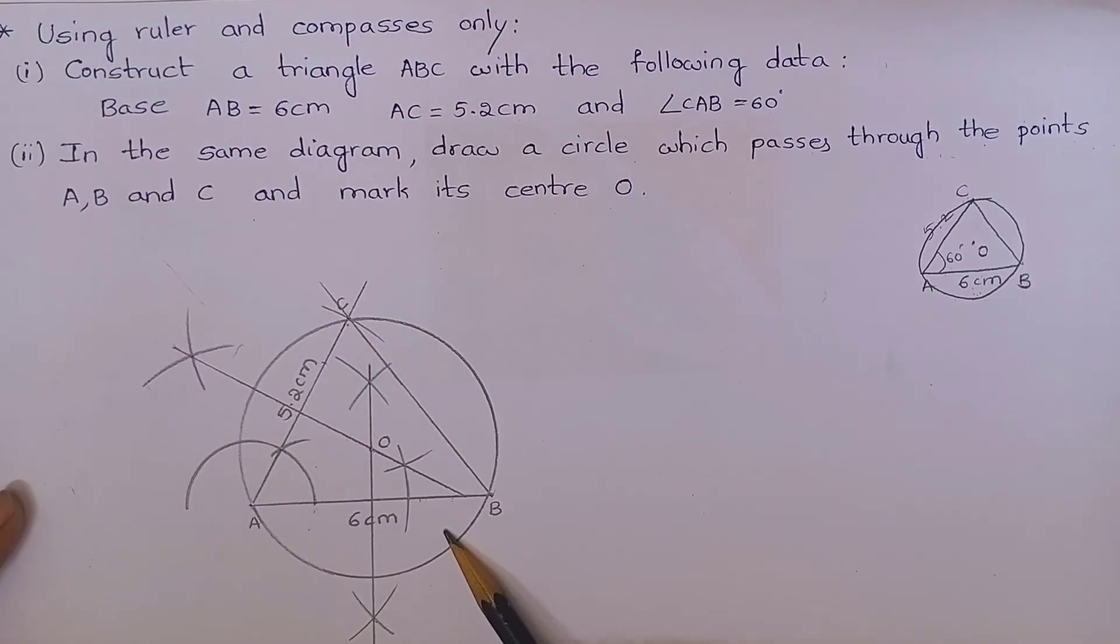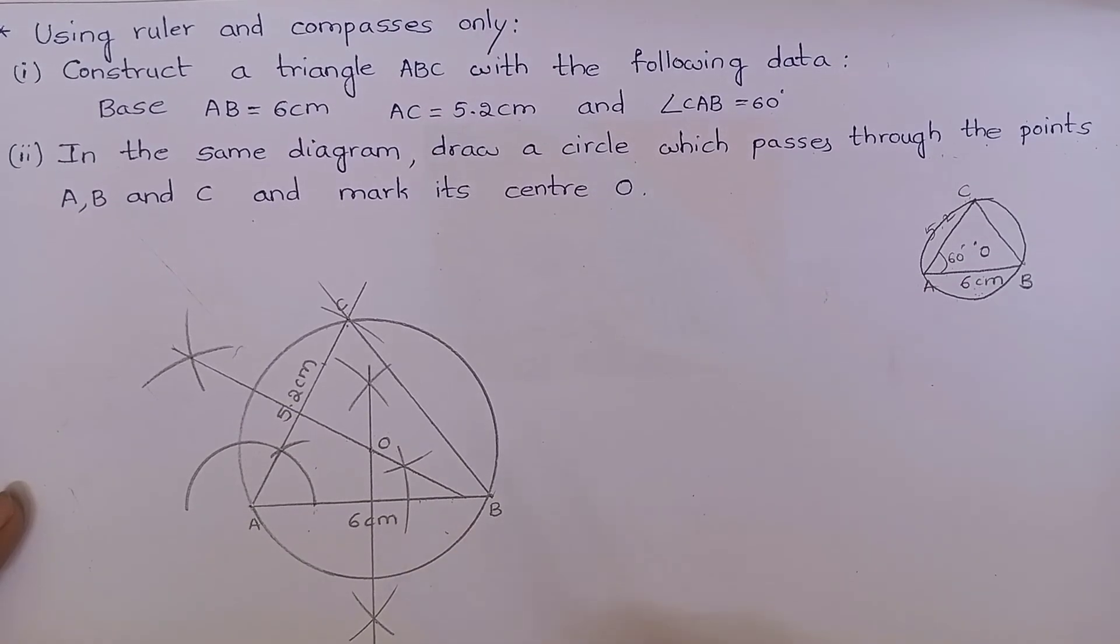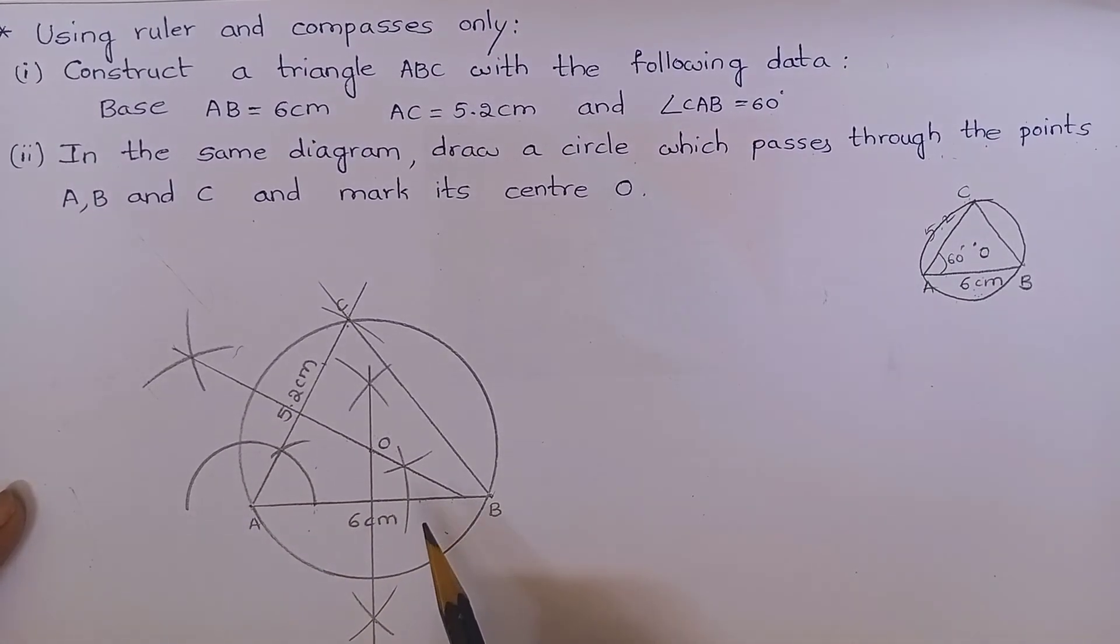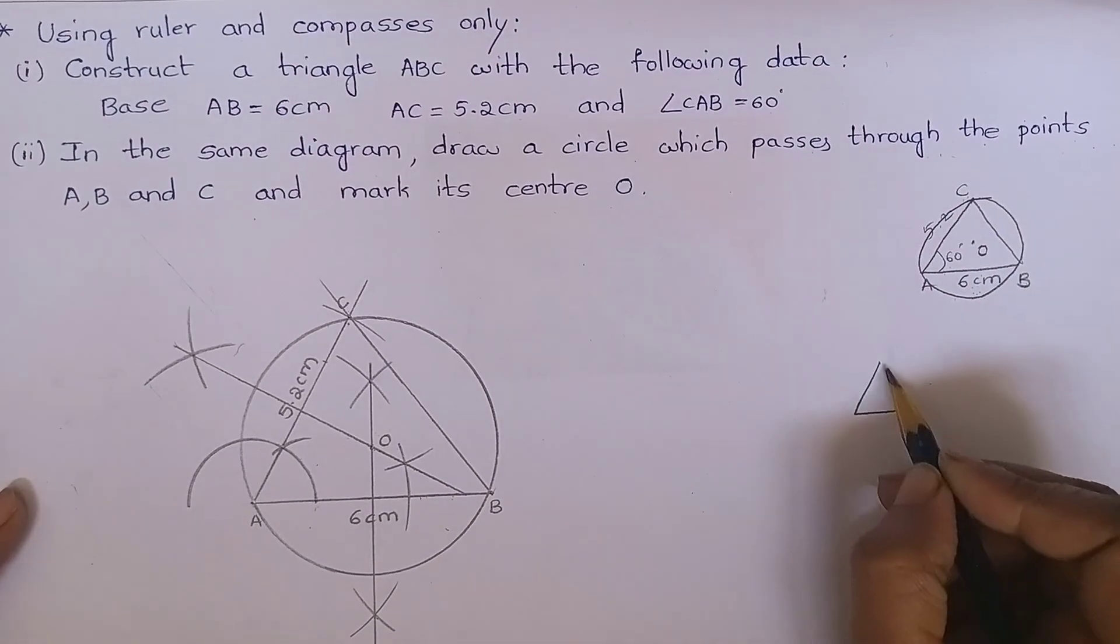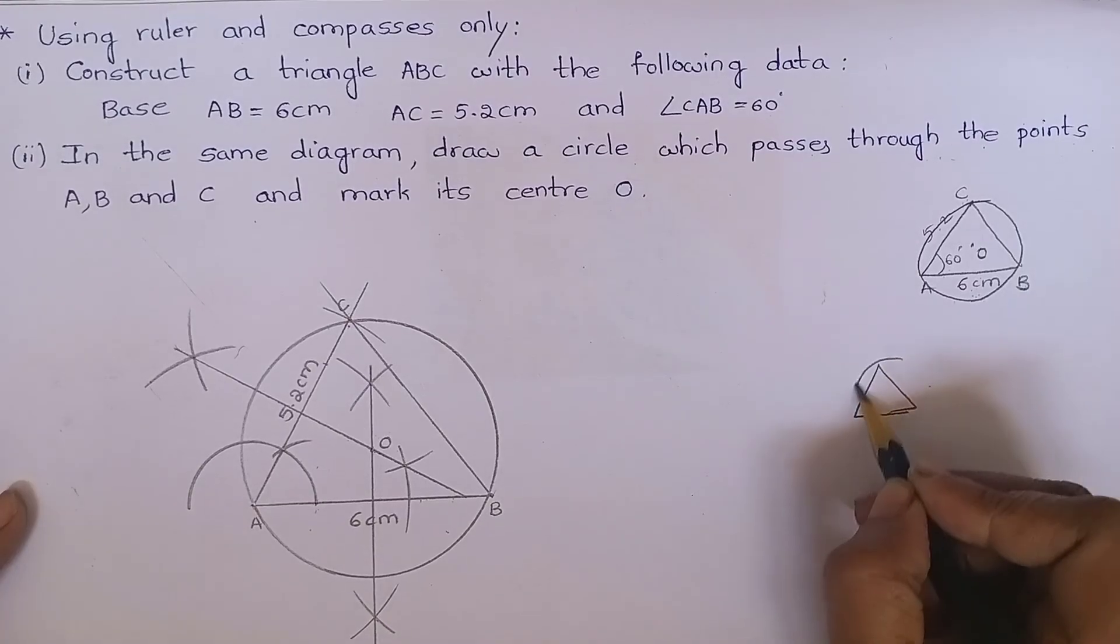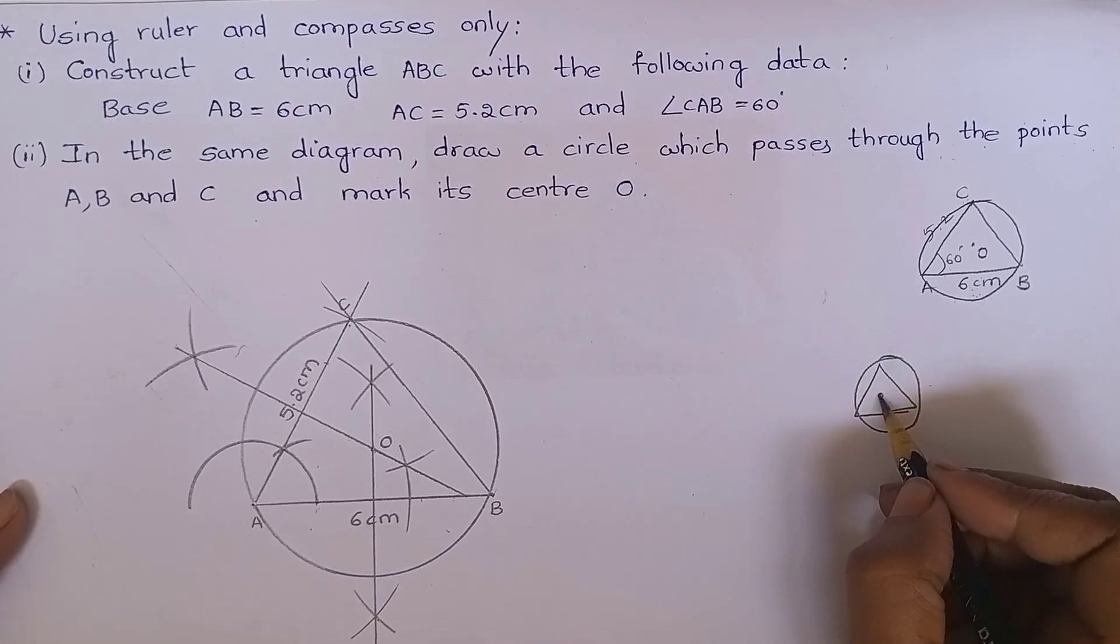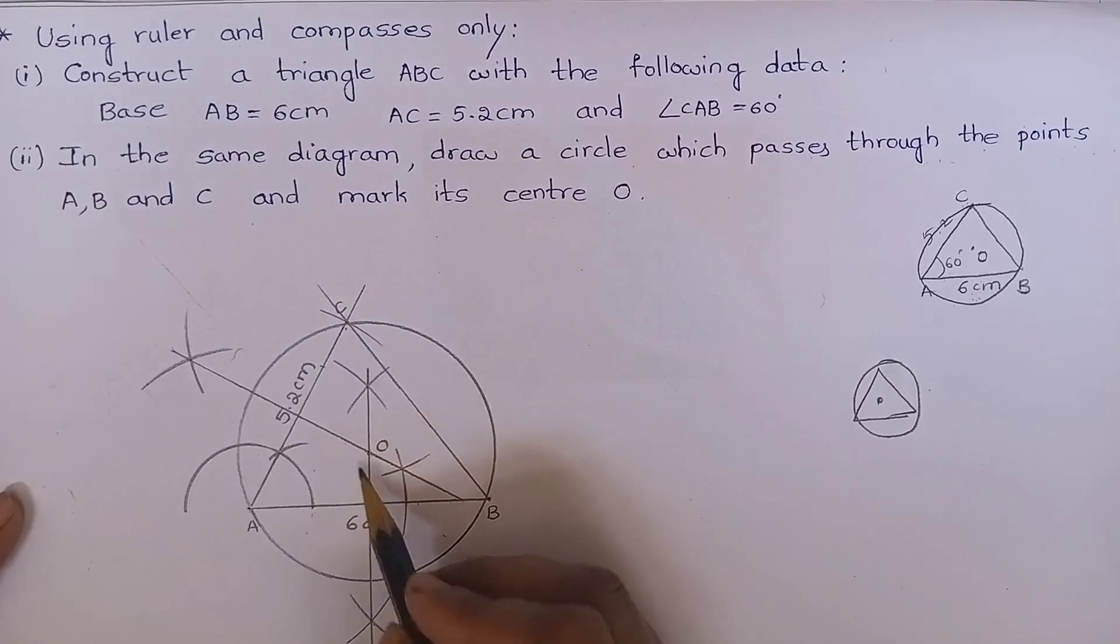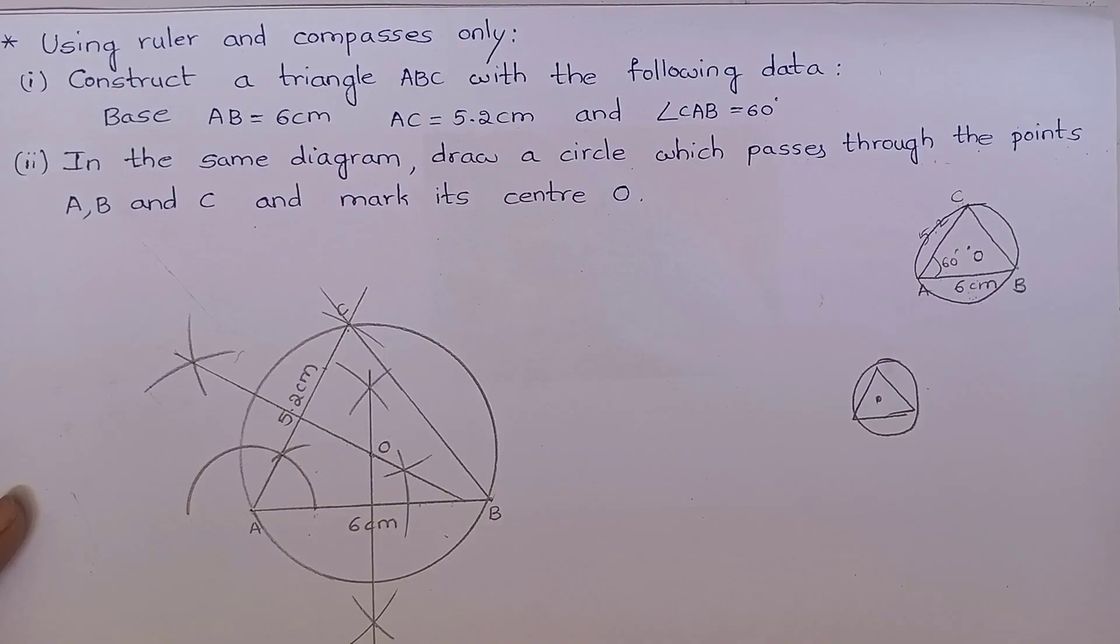Hope you have understood the construction. Let me give the additional information. Here, it is an acute angle triangle. In an acute angle triangle, the circumcenter lies inside the triangle. Hope you have understood. Thank you.